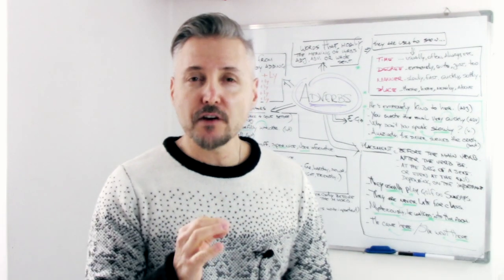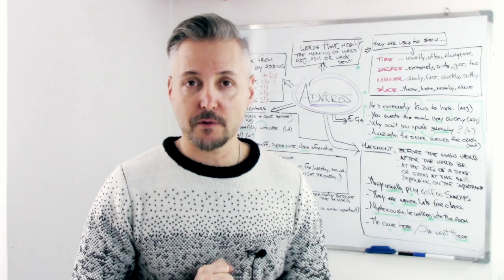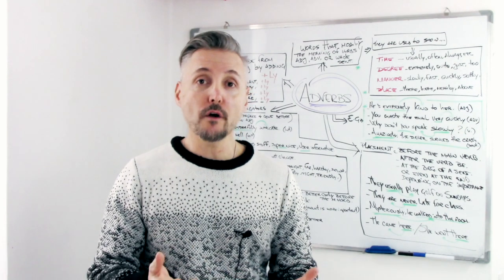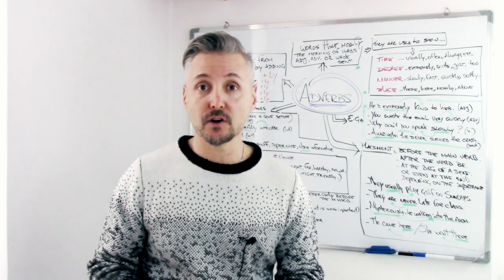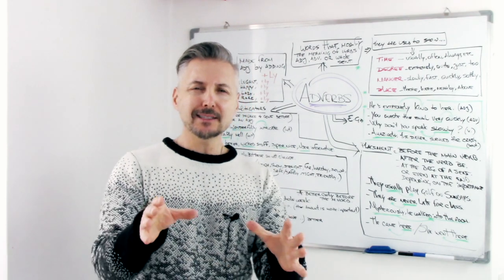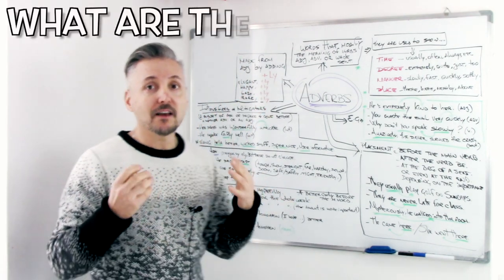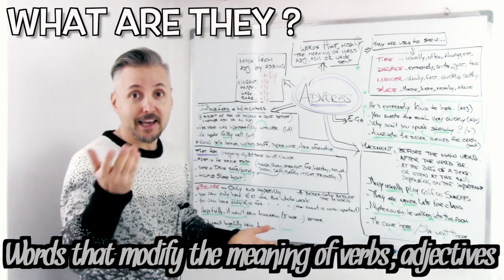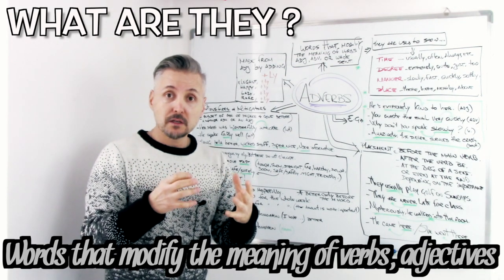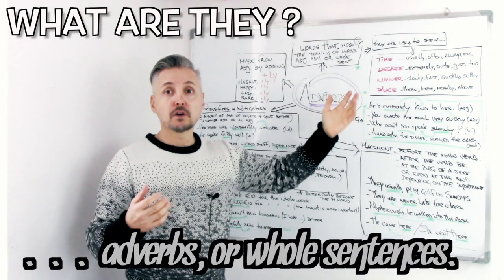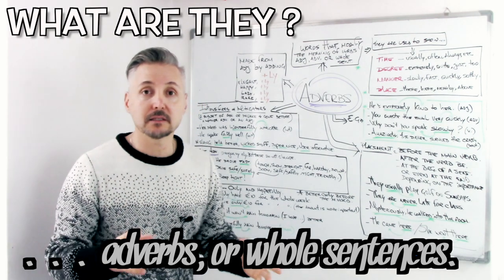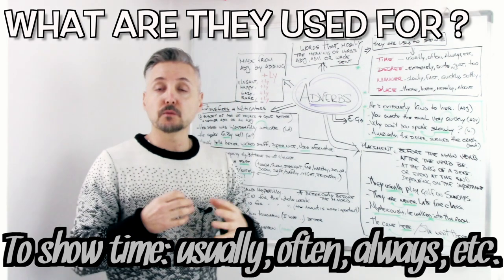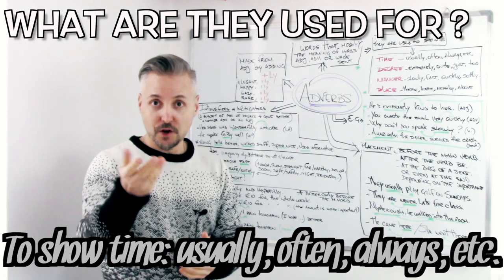Let me tell you first that adverbs are a very important part of English grammar. Why? Because they can modify whole sentences or even verbs or other adverbs or adjectives, obviously. Let's take a look at what they are. They are words that modify, like I said, the meaning of verbs, adjectives, adverbs, or whole sentences. They are used to show time, and we have adverbs of time, like you know which ones. Usually, yes, often, right, always.